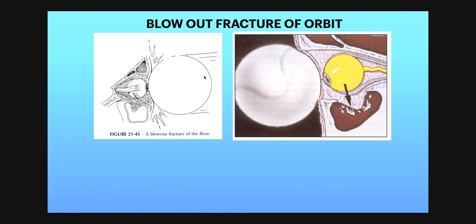This picture is showing a blowout type of fracture. How does this blowout type of fracture occur? When a larger object, larger than the size of the orbit, hits the orbit, it causes a blowout type of fracture. The floor is gone and the orbital content is herniating down into the maxillary sinus.